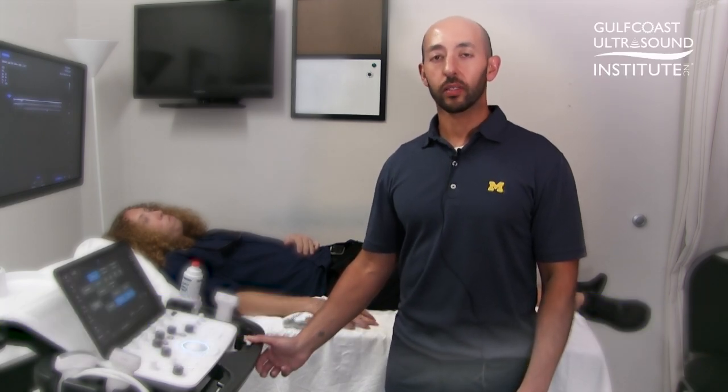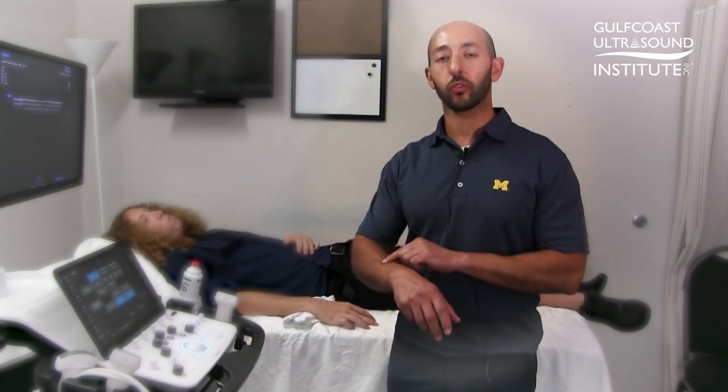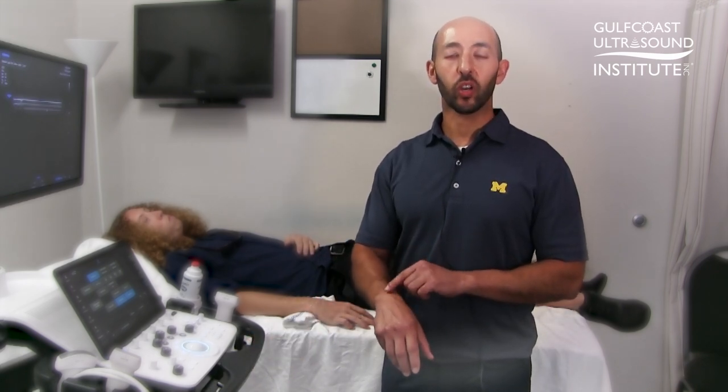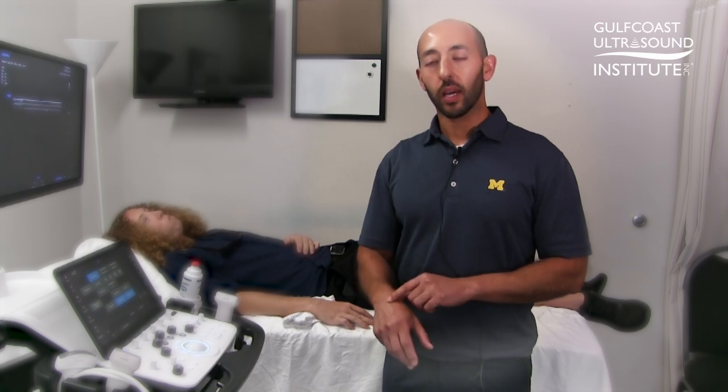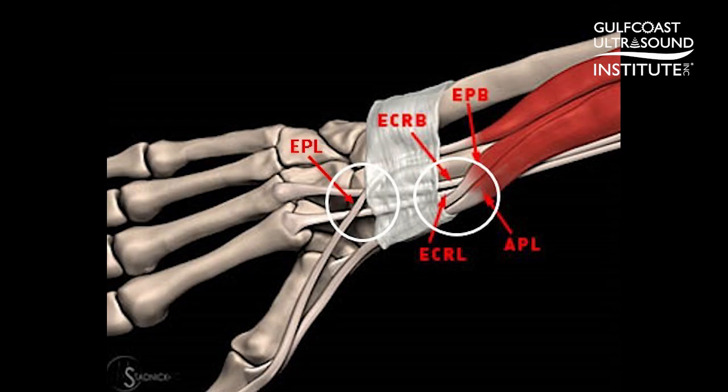We know there are two different intersection syndromes — the more common being the proximal intersection syndrome where compartment number one crosses over number two, and the more distal or less common intersection syndrome, the distal intersection syndrome where compartment three crosses over two. So both involve compartment two, with one crossing over two first, then distally three crossing over two.